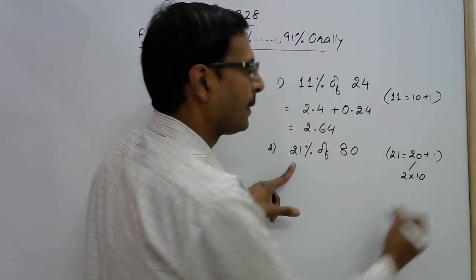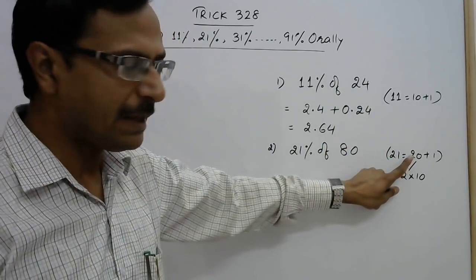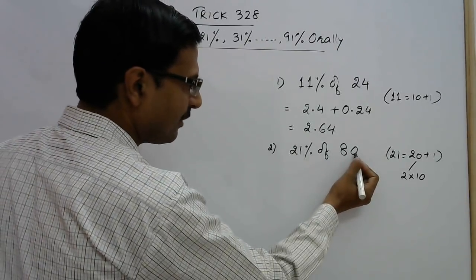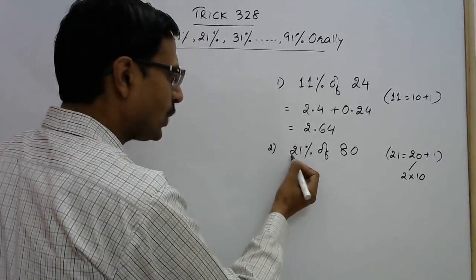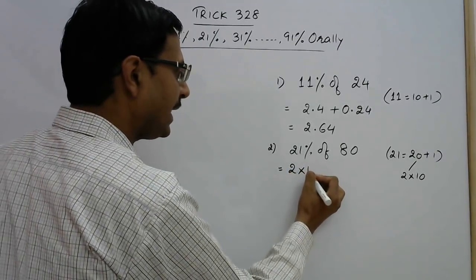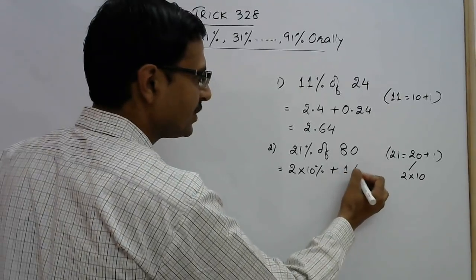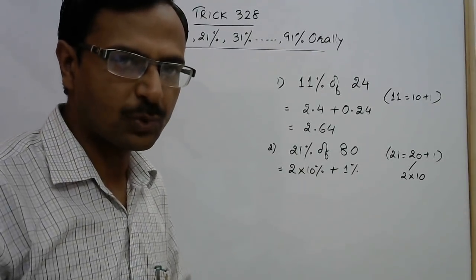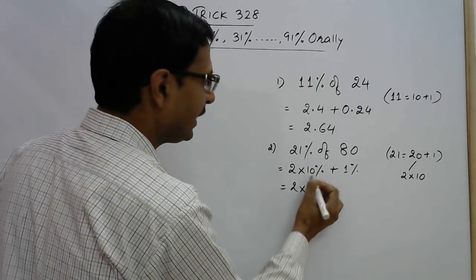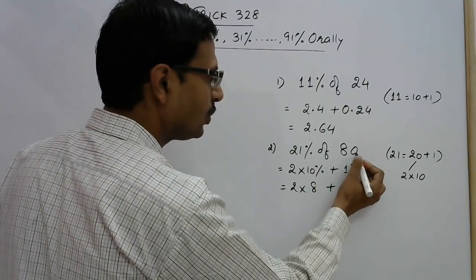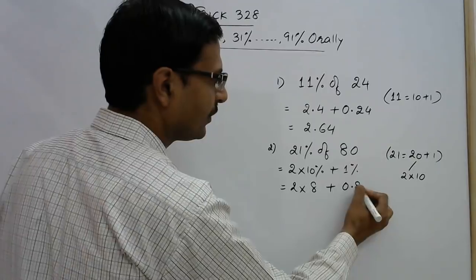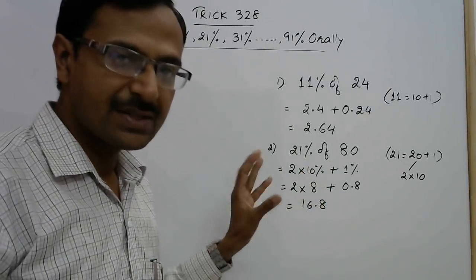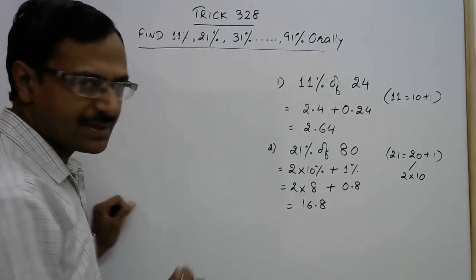So once we know how to calculate 10 percent, 20 percent should be very simple. See 10 percent of this, put a decimal one digit from the right side, so this will become 8. So 20 is 2 into 10 percent plus 1 percent. So 2 into 10 is 20 percent, that's 16, plus 1 percent that is 2 digits from the right side, so 0.8. So this is 16.8. 21 percent of 80 is 16.8.